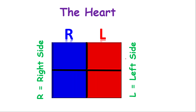The heart is also divided into two sides: the right side and the left side. An easy way to remember it is based on your hand — raise your left hand and it will point to the right side of the heart; raise your right hand and it points to the left side. The left and the right are separated by a muscle in the middle called the septum.